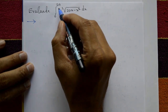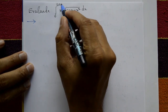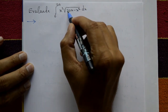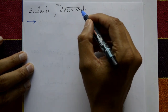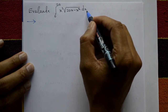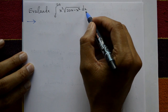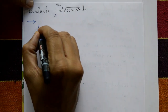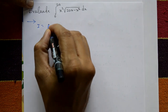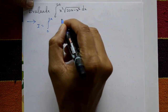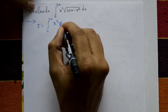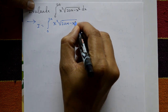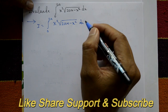Evaluate the integration of 0 to 2A of x² into √(2Ax - x²) dx. This is I, the integration of 0 to 2A of x² into √(2Ax - x²) with respect to x.